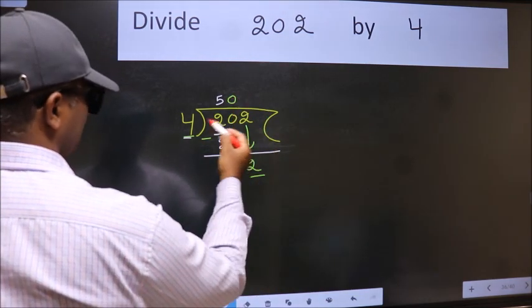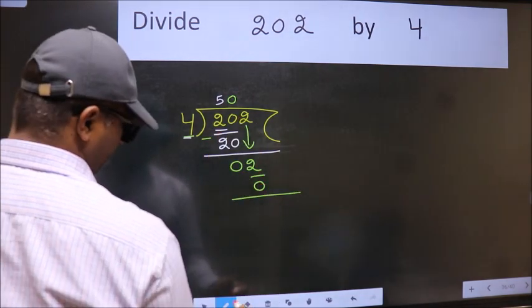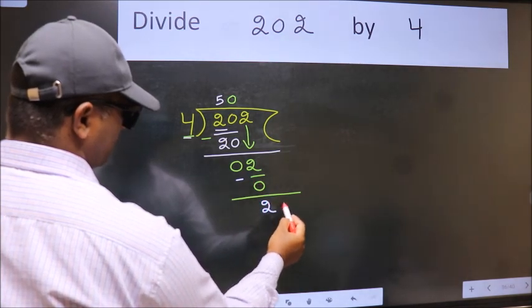So 4 into 0 is 0. Now we subtract. We get 2.